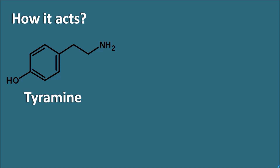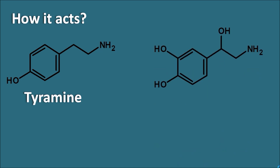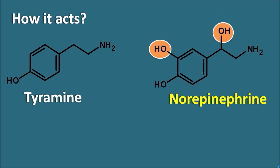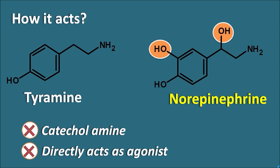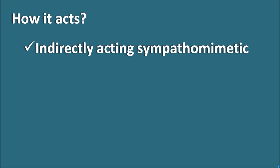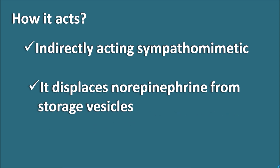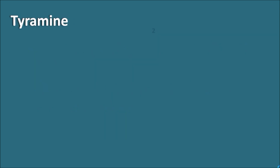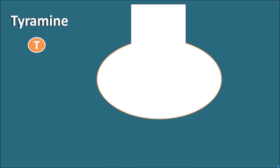Let us compare the tyramine structure with the catecholamine norepinephrine. Norepinephrine differs from tyramine in two aspects: norepinephrine has a hydroxyl group on the benzene ring and another hydroxyl group at the beta position on the side chain. These two hydroxyl groups are not present in tyramine. So tyramine is not a catecholamine and cannot act as a directly acting agonist like norepinephrine. Instead, it acts as an indirectly acting sympathomimetic — it displaces norepinephrine from storage vesicles, thereby increasing norepinephrine levels within the synaptic cleft and increasing noradrenergic transmission.